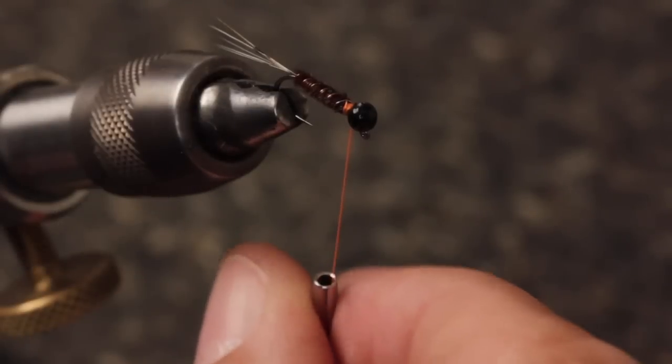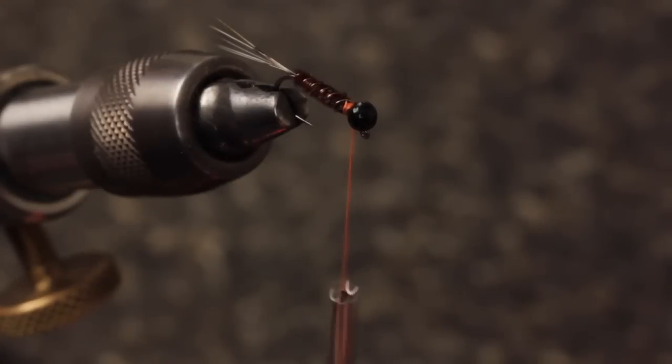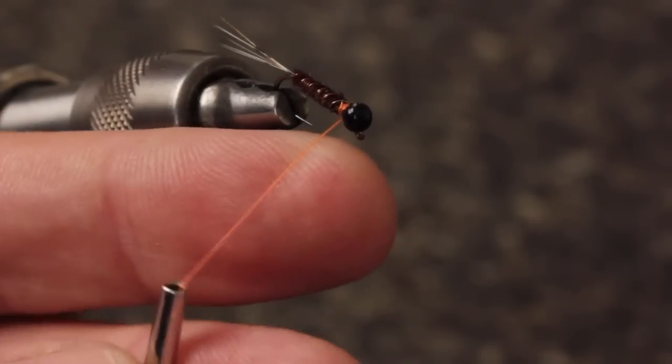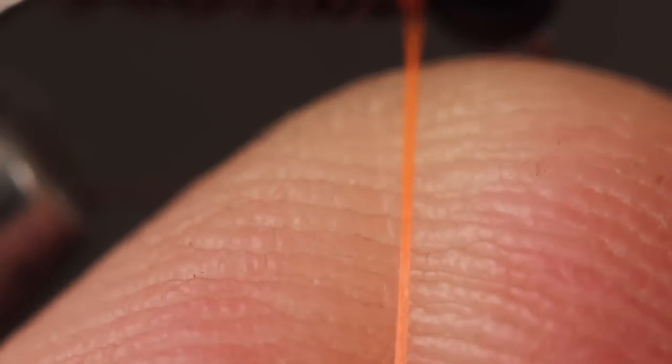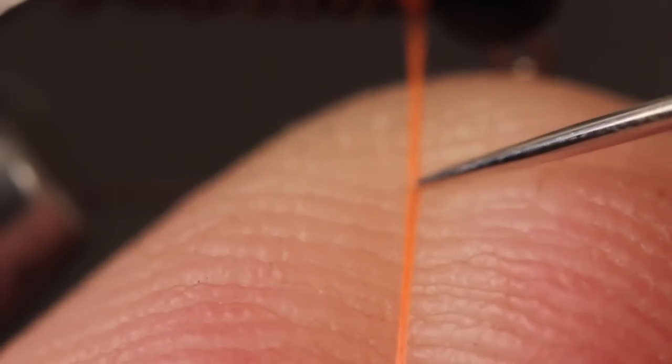Although you can dub directly on the thread, I prefer to give the bobbin a counterclockwise spin to flatten the thread and prepare it for dubbing using the split thread method. When flattened, UTC 70 splits quite easily with a bodkin or sewing needle.